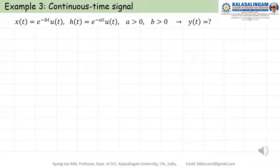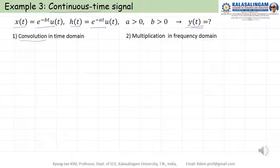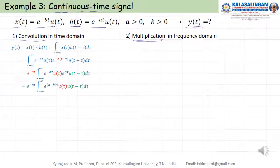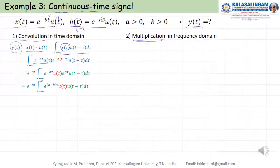This is a slightly more complicated example — the continuous time signal case. x(t) equals this, and h(t) equals this. Find y(t). There are two methods: convolution and multiplication. First, convolution: y(t) equals x(t) convolution h(t) by formula. Then x(τ), and h(t - τ). Therefore here and here — you can see these terms. The variable of the integral is τ, so this term with respect to τ is a constant and can be taken out of the integral.